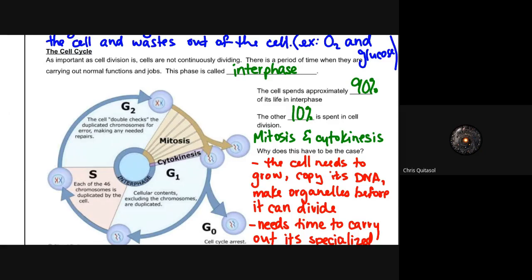This period of time where they carry out normal functions is called interphase, and they spend about 90% of their life in interphase. The other 10% is spent doing the division components: mitosis and cytokinesis, which allows for the cell to make a new one, split, and as a result have two cells from where there was once one.